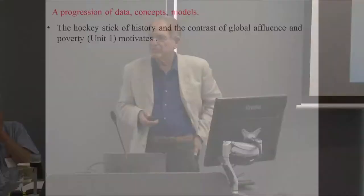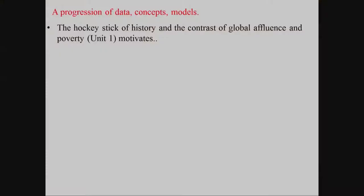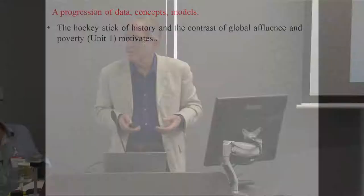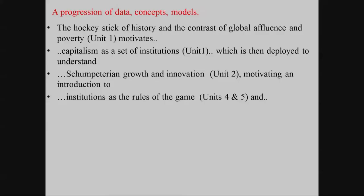We start with the hockey stick of history. We contrast global affluence and poverty. That, which we do in Unit 1, motivates the discussion of capitalism as a set of institutions — we define it as such. We then use that definition of this set of institutions called capitalism to understand a Schumpeterian growth and innovation process in Unit 2. This motivates an introduction to a general statement about what institutions are: they are the rules of the game. We use basics of game theory in Units 4 and 5, with institutions described as the rules of the game.